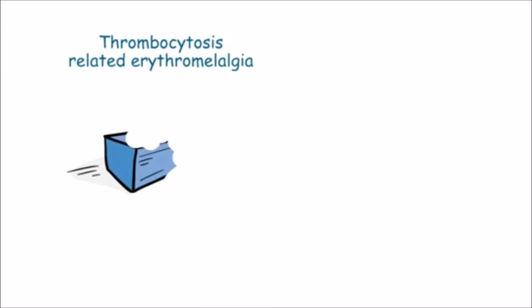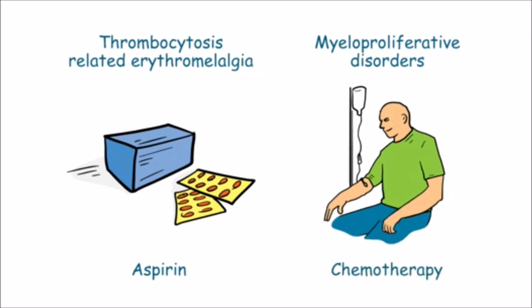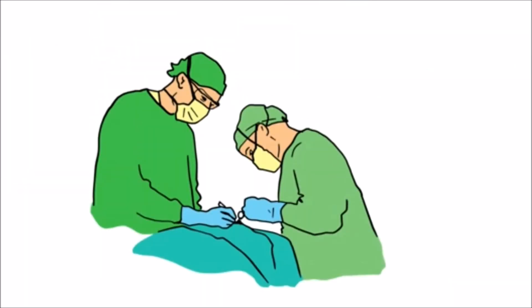For thrombosis-related erythromelalgia, aspirin is helpful. In patients with myeloproliferative disorders, chemotherapy may be helpful in relieving the symptoms. Surgery is only indicated to treat rare complications of gangrene.